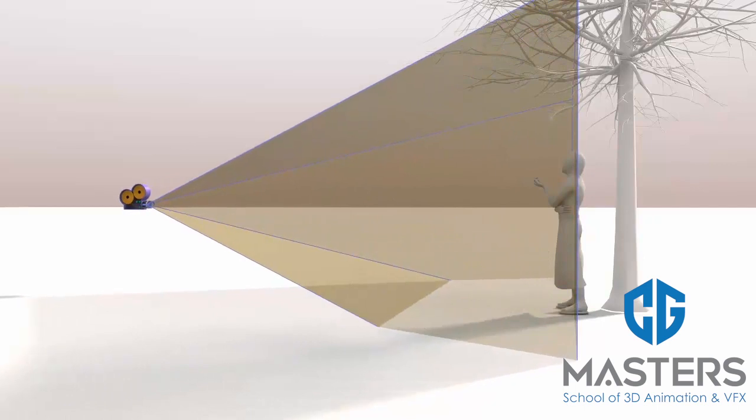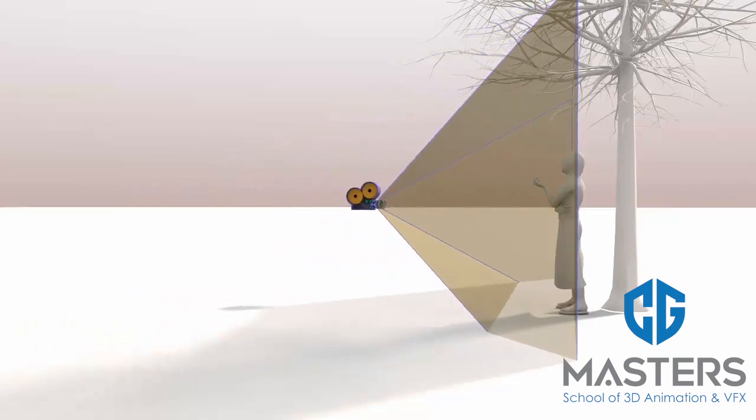It is possible to have the field of view remain the same while changing the angle of view by moving the camera and altering the focal length.